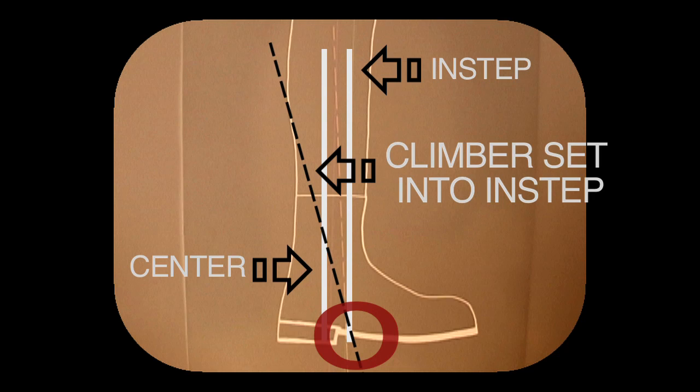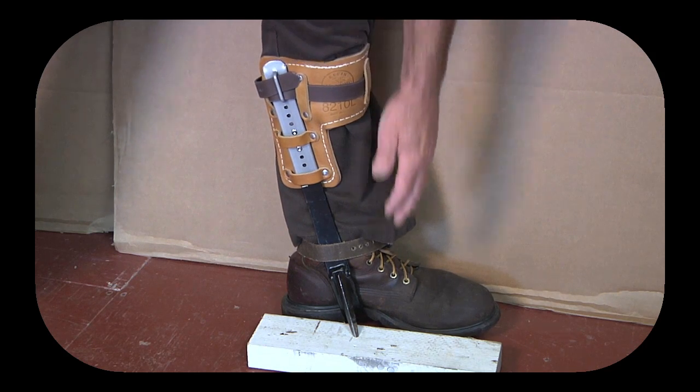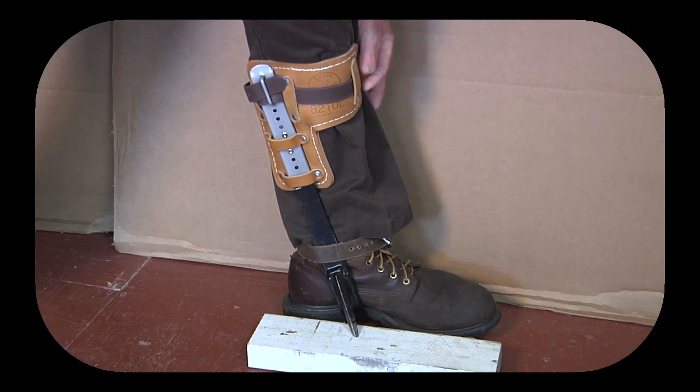This leaves the shank to literally hang on the top strap. The gaffing shock then lands on the shin at the edge of the shank and on the narrow strip of padding under the strap.